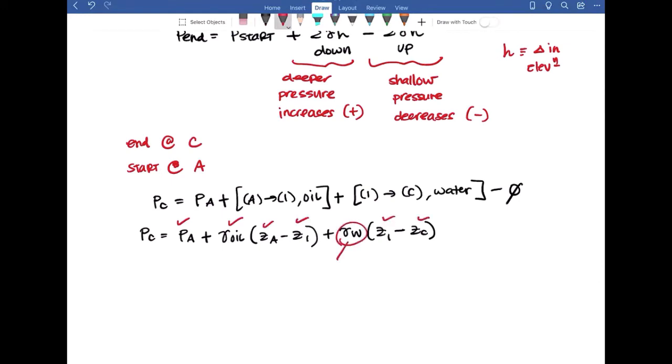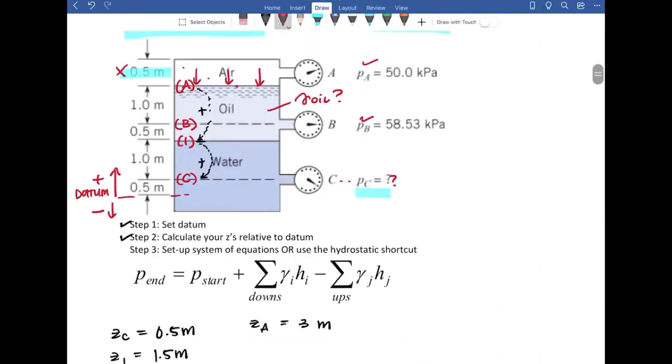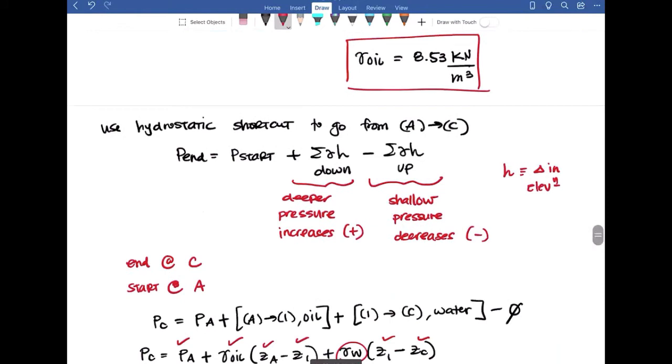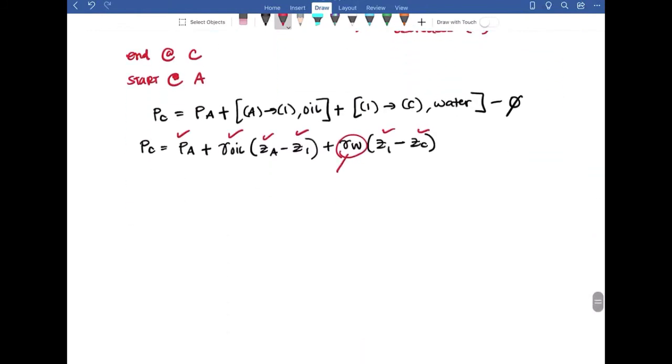Now for the specific weight of water, we were not given any information about temperature in the problem statement or in the image, so we can assume that we're dealing with standard water specific weight values. So I tend to use 9810 newtons per meter cubed. But I know that my pressure and my specific weight values are all in kilo values. So we're going to put this as 9.81 kilonewtons per meter cubed, and that'll make my math a lot easier.